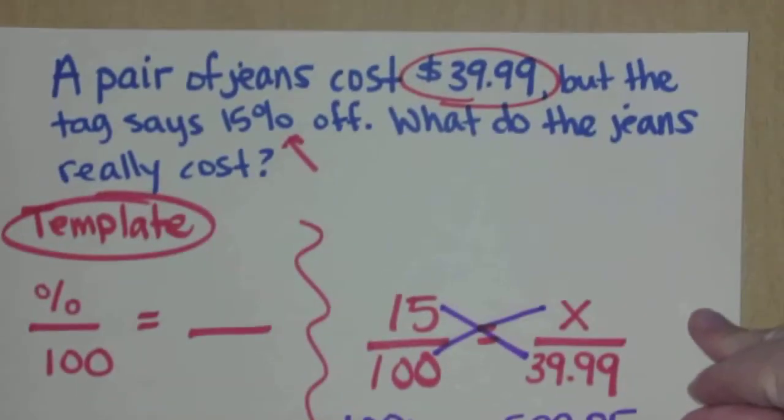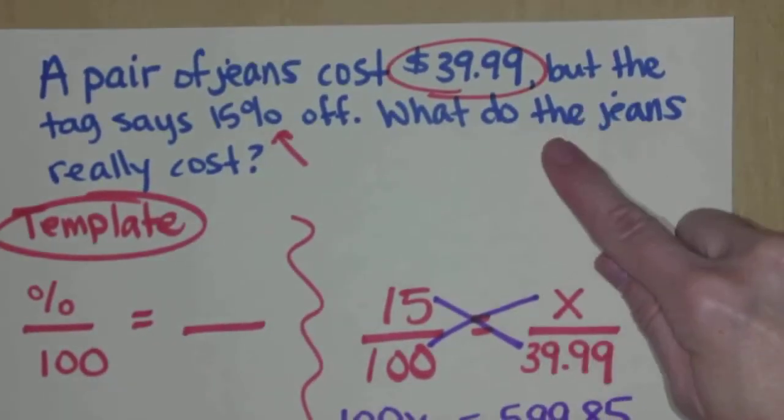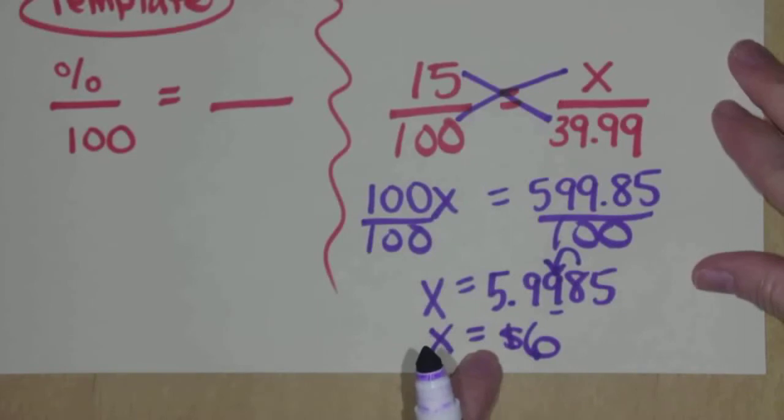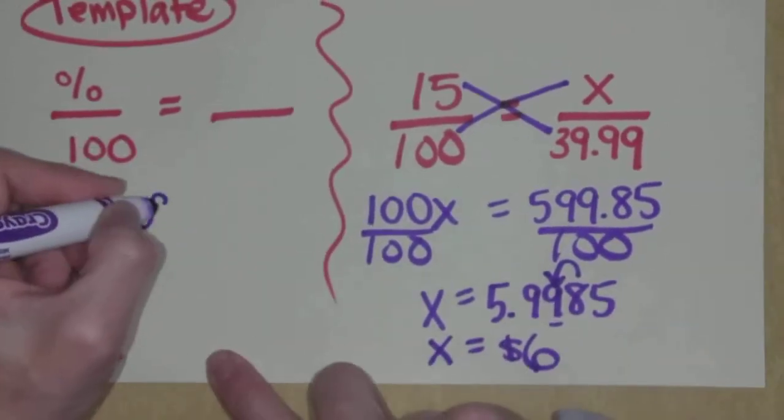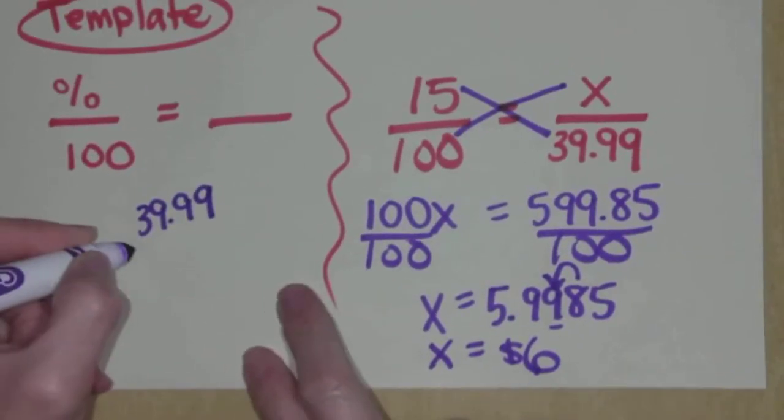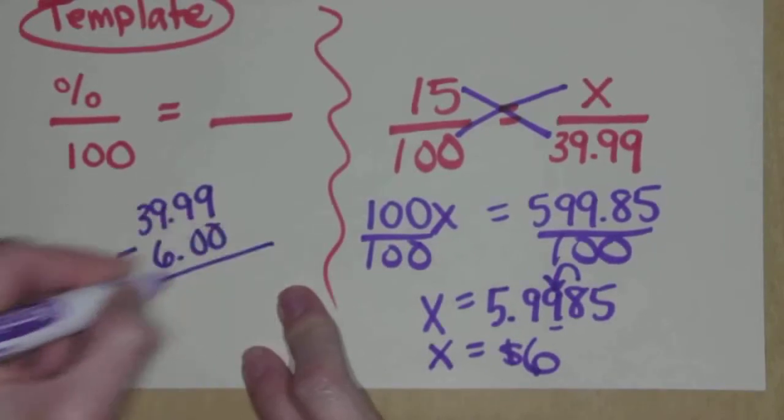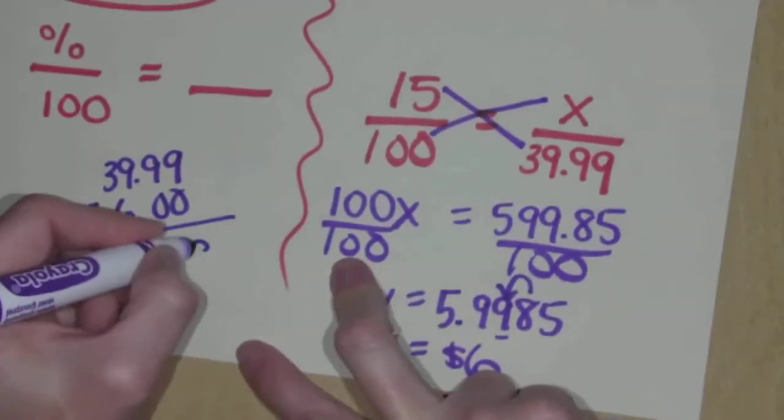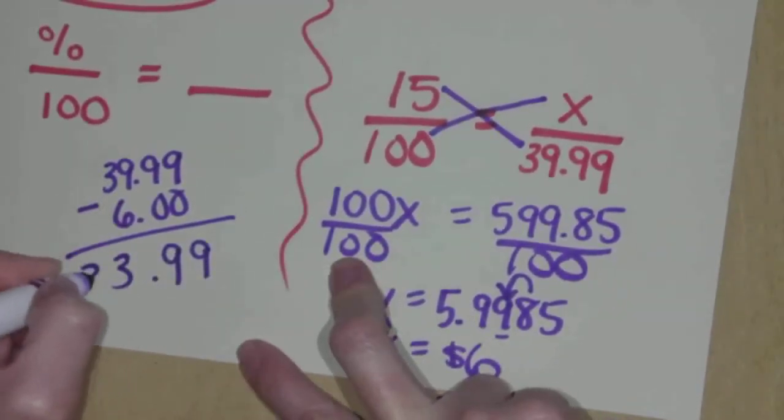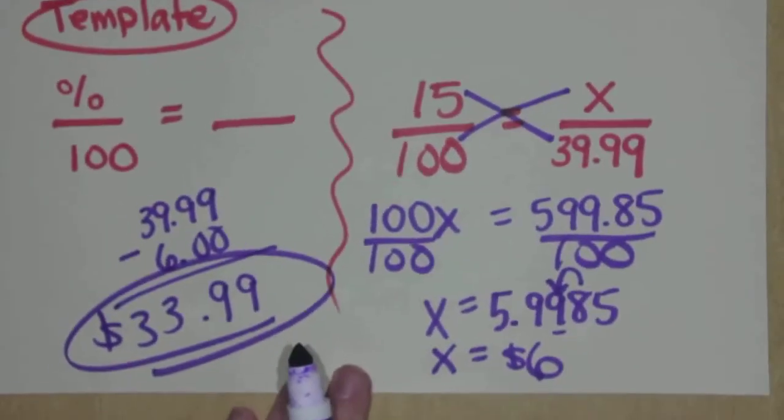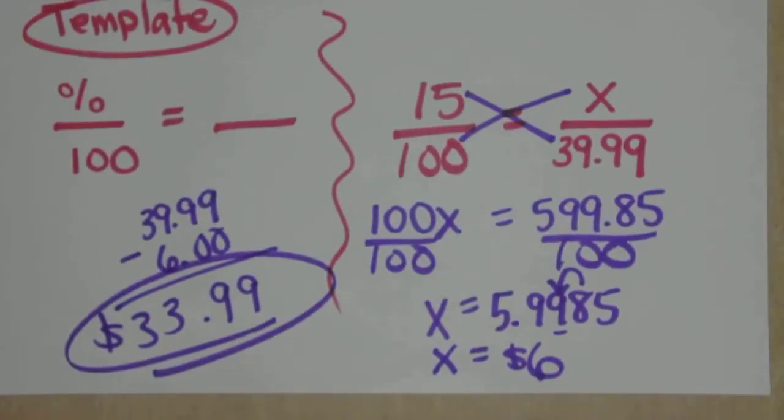Now the question said, what do the jeans really cost? If you're getting six bucks off, we have to do one more step. $39.99 minus $6 is going to give us a grand total of $33.99. That's the answer to this problem.